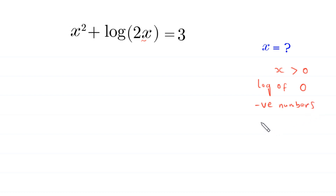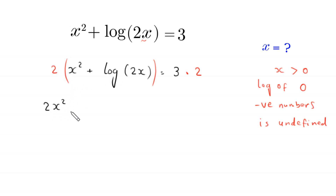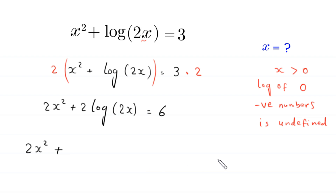Let's continue by multiplying both sides of this equation by 2. The equation is x squared plus log of 2x equals 3. We multiply both sides by 2. On the left-hand side, distributing gives 2 times x squared, which becomes 2x squared, and 2 times log of 2x. On the right-hand side, 3 times 2 becomes 6.